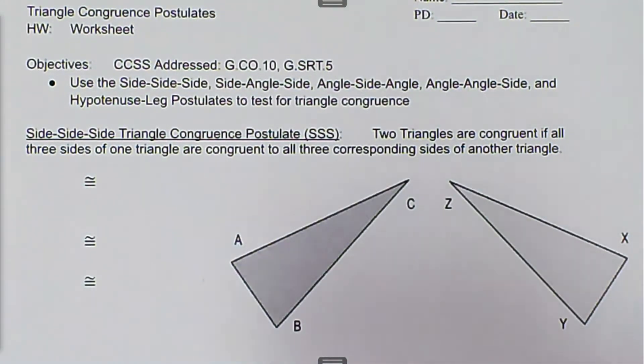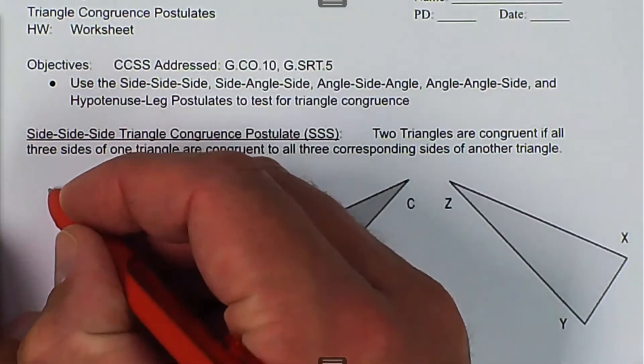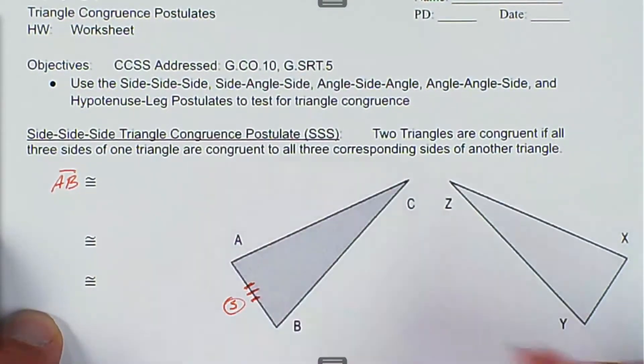In this case, we'll mark on here, we have AB, so this is a side, and that is going to be congruent to XY.